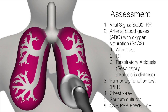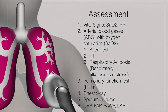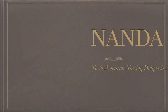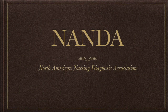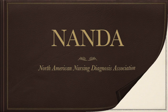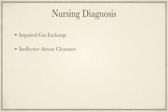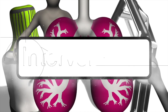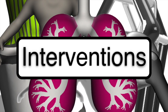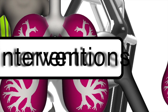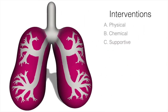All findings depend on the underlying cause of respiratory failure. With the gathered assessment data, three main NANDA nursing diagnoses apply: impaired gas exchange, ineffective airway clearance, and ineffective breathing pattern. Nursing interventions are divided into three categories: physical, chemical, and supportive.